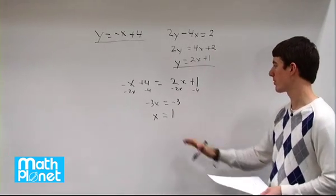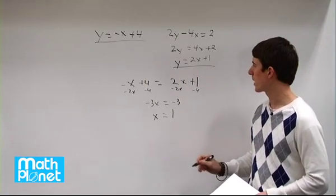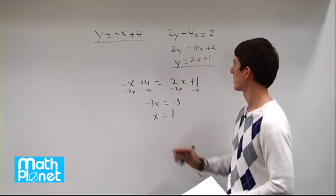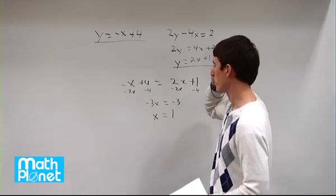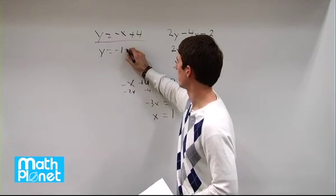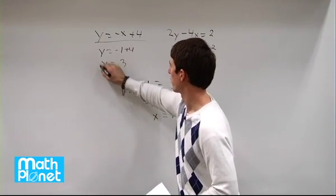So we're halfway home, we have the x value of 1. Now we can pick either one of these equations, doesn't matter which one, and we'll find if we plug in and evaluate at x equals 1 what the value of y is. Let's take this one. If we plug in and evaluate at x equals 1, we have y equals negative 1 plus 4, and that gives us y equals 4 minus 1 is just 3.